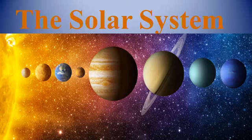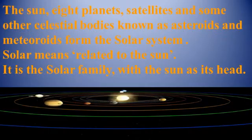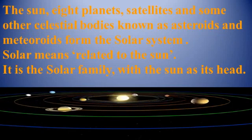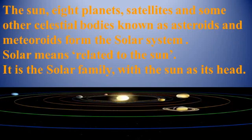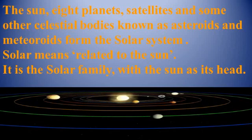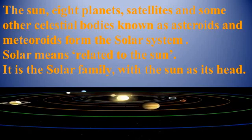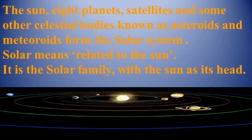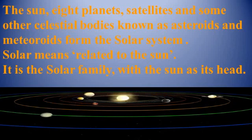The solar system: the sun is the central and largest body in the solar system, which consists of eight planets and their satellites and smaller astronomical objects such as asteroids and meteoroids. All planets and other bodies move around the sun in fixed paths called orbits. The gravitational pull of the sun keeps all the planets and other bodies in their orbits within the solar system. The word 'solar' is derived from the Latin word 'sol,' meaning related to the sun. The solar system is the family of the sun.